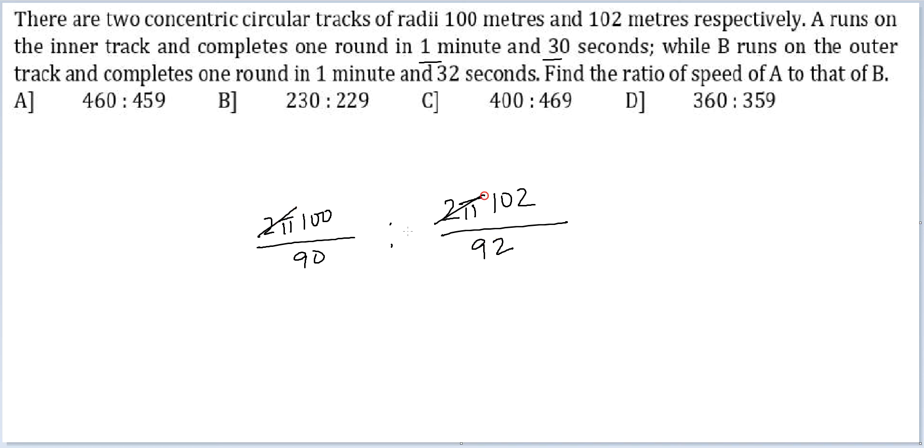So 2π and 2π cancelled. Zero and zero cancelled. 51, 46. I will get 460 at the top and 51 into 9. 460 at the top.